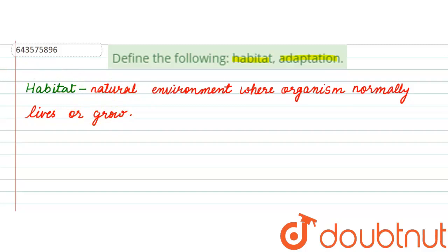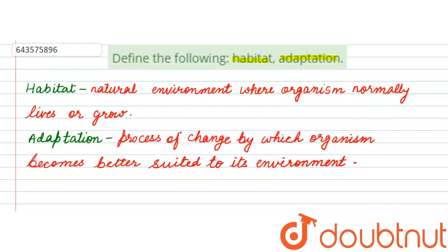Now let's start with the next term — adaptation. Adaptation is the process of change by which an organism or species becomes better suited for its environment. The soil and climatic conditions on the land differ from path to path on earth. It is necessary for an organism to adjust to the conditions and environment they live in. The special characteristics possessed by plants and animals that enable them to successfully survive in a particular environment is called adaptation.